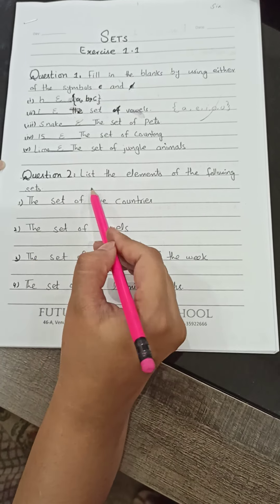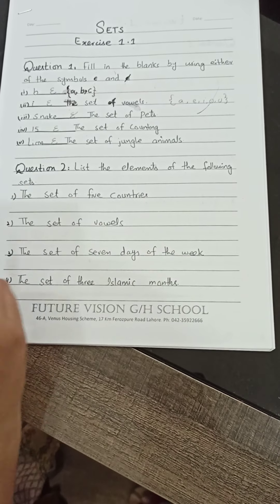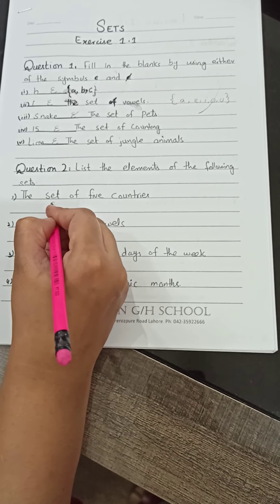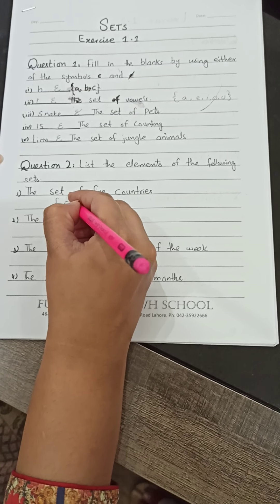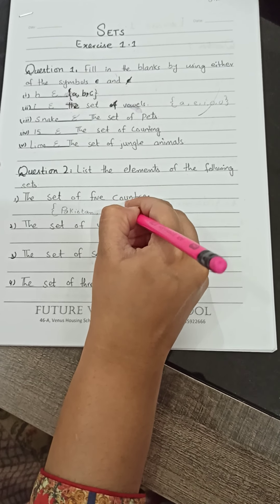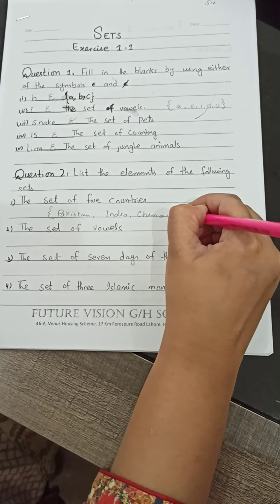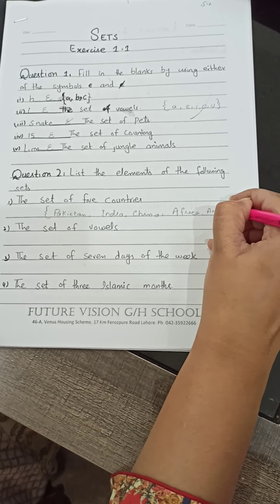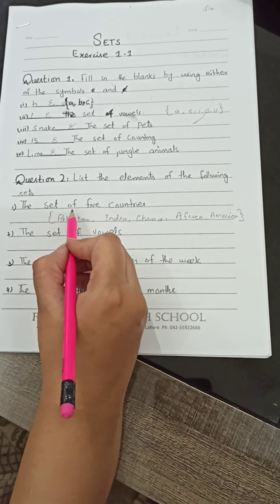Now moving toward question number 2: list the elements of the following sets. The set of five countries — we write a set using brackets. For example: {Pakistan, India, China, Africa, America}. You can write any five countries you would like. Put the brackets and it is a set of five countries.